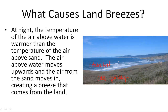So, the air above water moves upwards because it's warmer. And the air that's hanging out over here that's cooler rushes in to fill that spot, creating a breeze from the land — a land breeze.